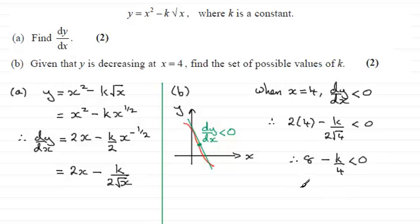And if I add k upon 4 to both sides, I've got k over 4, must be greater than 8. Multiply both sides now by 4, and you end up with k must be greater than 32.